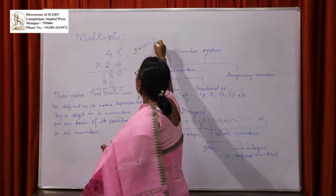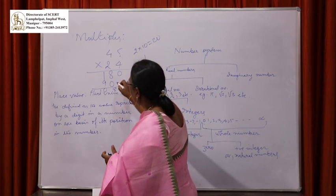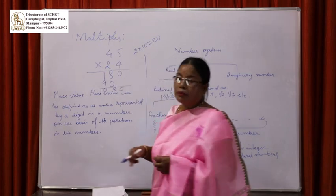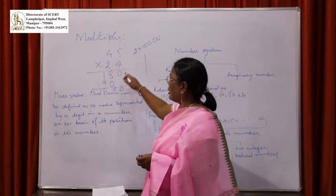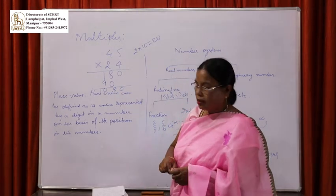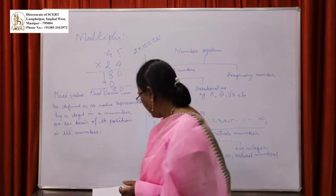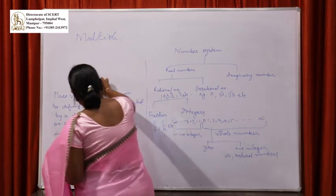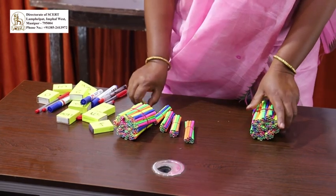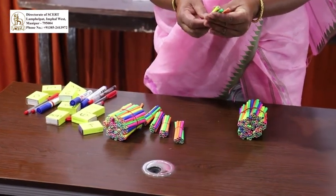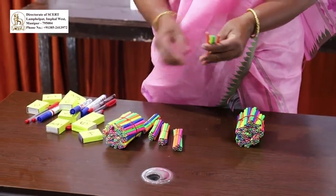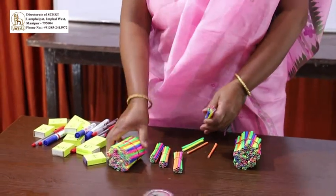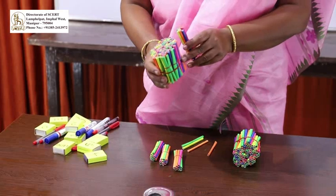That is 20. That is about 900, and that is about 90. So this is the concept of place value — each digit holds a value based on its position.